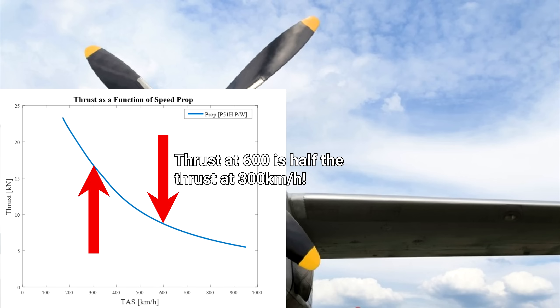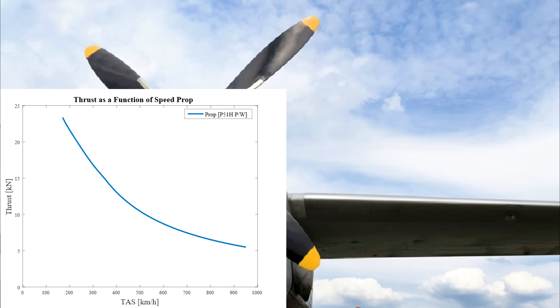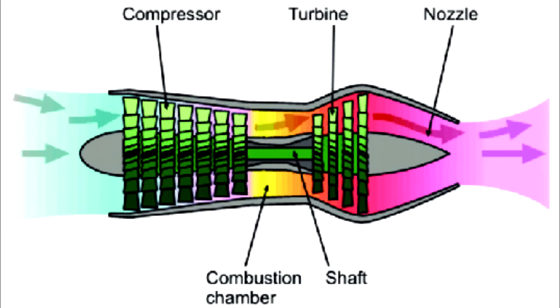The reason for this is because it takes an increasing amount of power to further accelerate the air the faster it's already going, since kinetic energy is proportional to speed squared. This is a big reason why piston engines aren't suitable for high speed aircraft, but they are efficient for low speed aircraft.